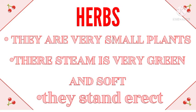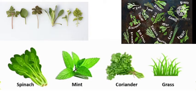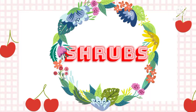Herbs: They are very small plants. Herb bahut chote plants hote hain. Their stem is very green and soft. Unki stem green aur bahut soft hoti hai. They stand erect. Herbs seedhe khade hote hain. Examples for herbs are spinach, mint, coriander, and grass.